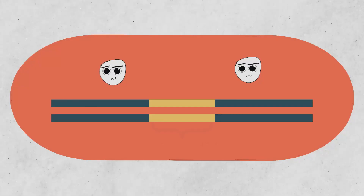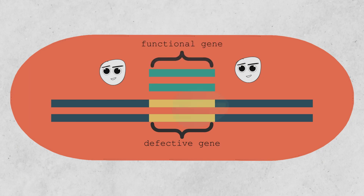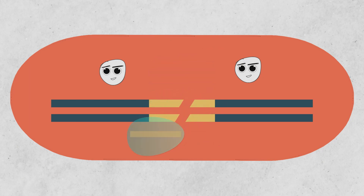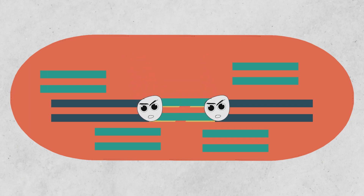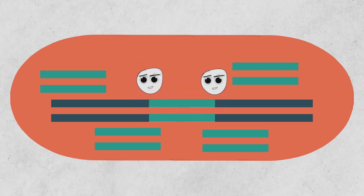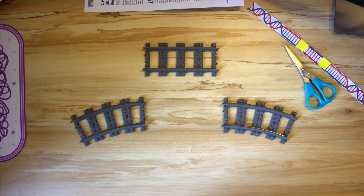Now we want to replace a defective insulin gene that causes diabetes with a functional one. We cut the defective gene with Cas9, which triggers the DNA repair proteins. But this time, we add a surplus amount of the functional gene into the cell. This increases the chances of the repair proteins picking up the functional gene and using it as a template to repair the broken DNA. Think of this as replacing the broken road with a new one. The road works normally and everyone is happy. This is what gene editing is — it's all about manipulating the DNA repair pathways of the cell.